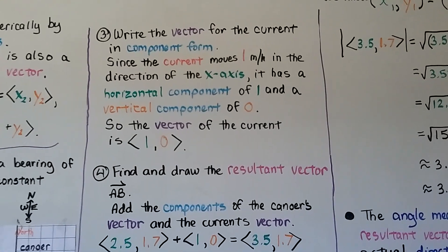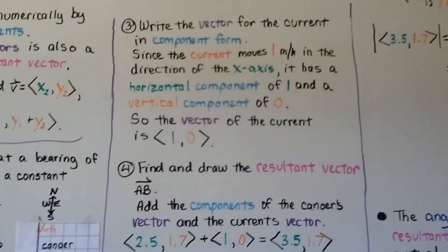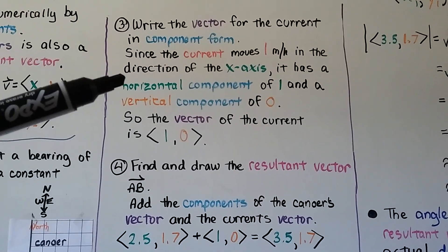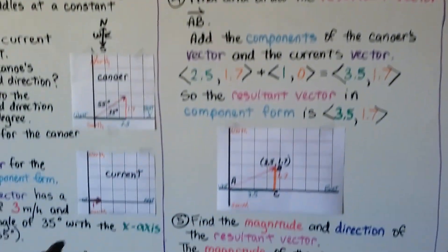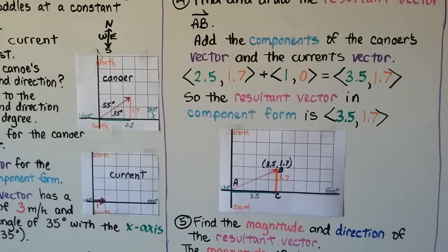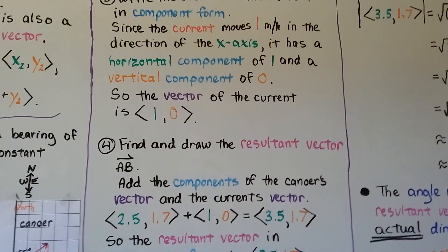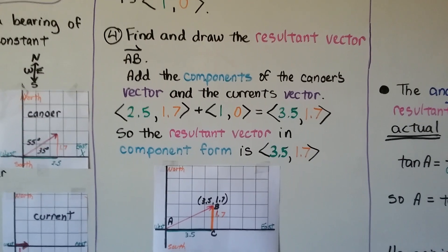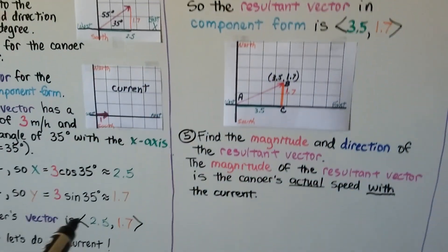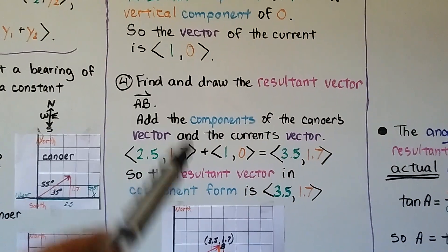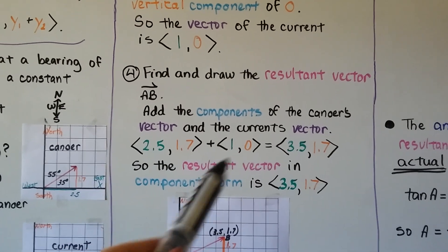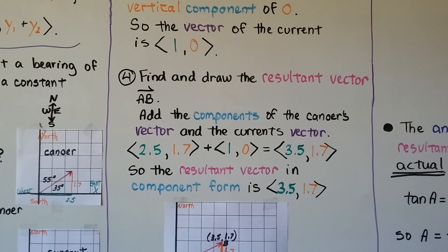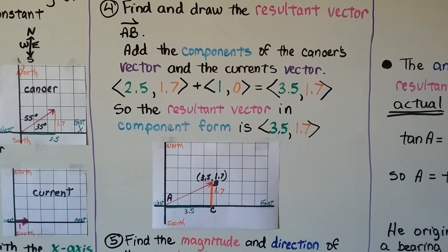Now we write the vector for the current in component form. Since the current moves 1 mile per hour in the direction of the x-axis, it has a horizontal component of 1 and a vertical component of 0. So the current's vector is 〈1, 0〉. We find the resultant vector by adding the components: the canoer's vector 〈2.5, 1.7〉 plus the current's vector 〈1, 0〉. The x-values added together give 3.5, and the y-values give 1.7. The resultant vector in component form is 〈3.5, 1.7〉.